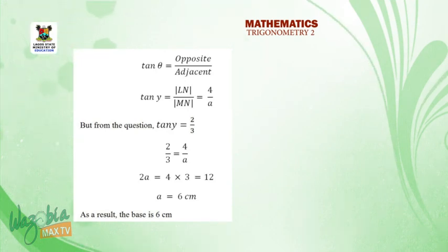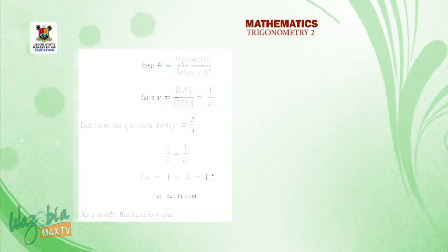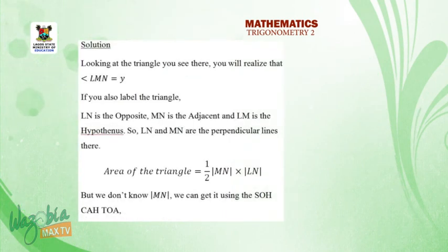So as a result, the base is 6. Hence, we can say area of the triangle is half 6 times 4, which is 3 times 4, and that is 12 cm squared. In the next segment, we shall look at finding the area of a triangle whose perpendicular height is not given. Thank you very much.